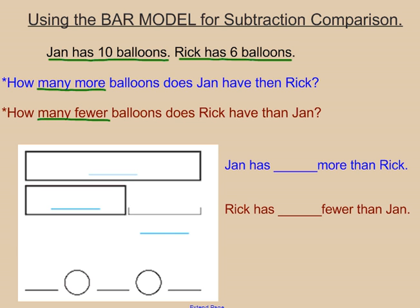First thing we notice about a bar model in this kind of comparison is that there is a large box. You can see it here. I'm going to outline it in green, and then a smaller box, which I'm going to outline in blue. And you have to know which number to put in which box. It would make sense that the larger number would go in the larger box. So I'm going to put Jan's 10 in this box, and I'm going to call it Jan so I don't forget who has 10. Then in the next box, I would put the smaller number because the box is smaller, and I'm going to call that one Rick.